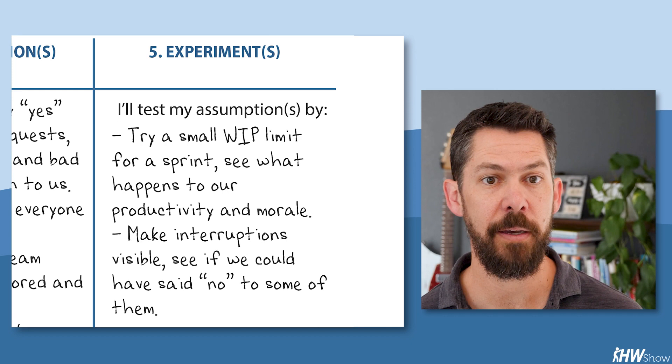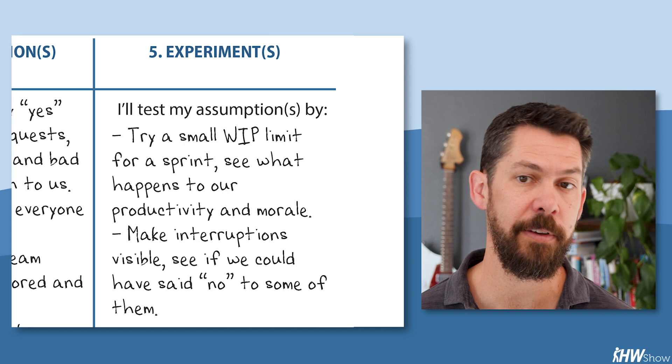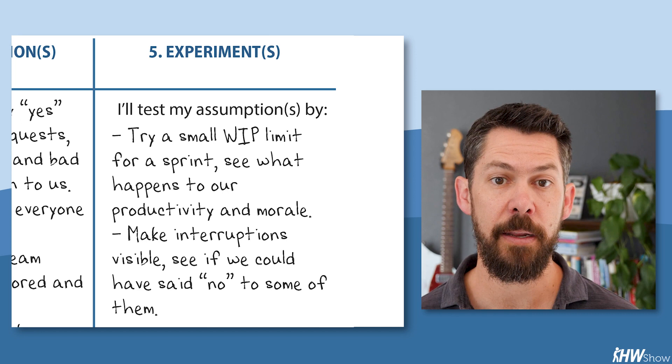Finally, column five, how might we test those assumptions? Well, we could try a small work in progress limit for a sprint. See what happens to our productivity and our morale. We could make interruptions visible when people ask for things and see if we could have said no to some of them. I like that one, by the way, because it's not actually say no to them. It's keep saying yes, but look at them and see, could we have said no to some of these? Nice and safe. In the end, a team that runs those kinds of experiments is likely to discover that finishing things has pretty immediate positive outcomes and that the worries mostly don't materialize. This makes it much easier to stick to the change.